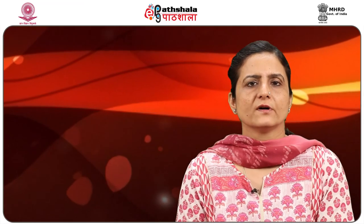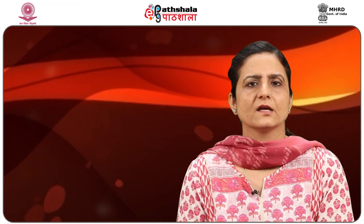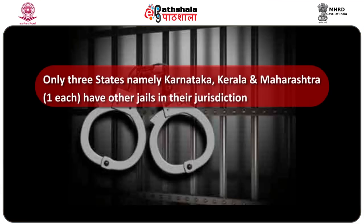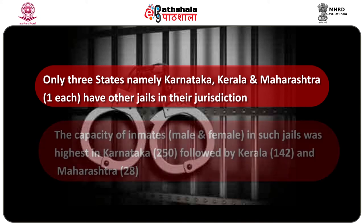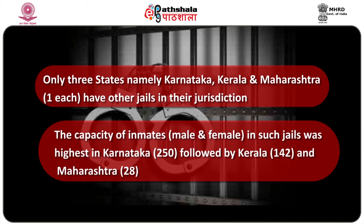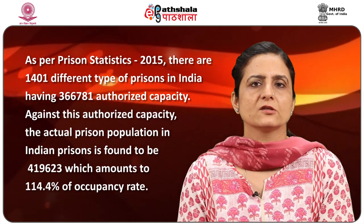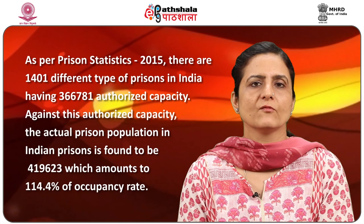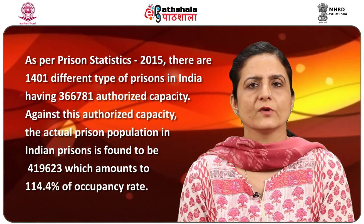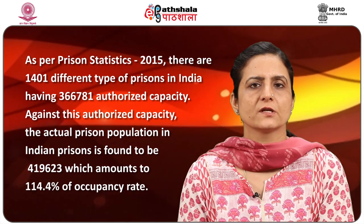Other types of jails also exist, with only three states — Kerala, Karnataka, and Maharashtra — having one other category of jail. The capacity was highest in Karnataka at 250, with Kerala at 142 and Maharashtra at 28. This information is available in the prison statistics published by the NCRB each year. There are 1,400 prisons with more than 3 lakh capacity, and the actual prison population in India was found to be approximately 4 lakh 20,000, which is 114.4% of the occupancy rate.